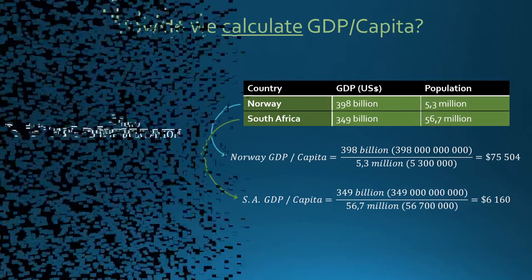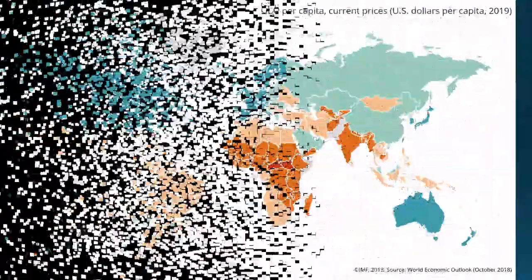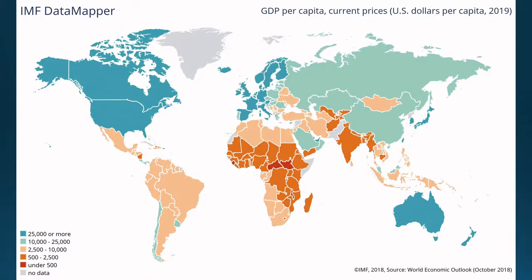If we look at the GDP per capita scores around the world, we can notice that certain regions have much higher scores than others. North America, Europe, and Australia and New Zealand have by far the highest average GDP per capita. The least developed regions in the world, according to GDP per capita scores, are Africa and subcontinental Asia.